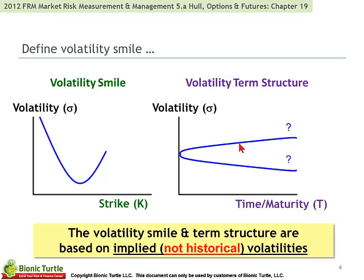The volatility term structure gets a brief mention here. The only difference is it's implied volatility plotted over the x-axis, where that variable is time to maturity. Hull has less to say definitively about the volatility term structure, except that we can combine them into a three-dimensional volatility surface.